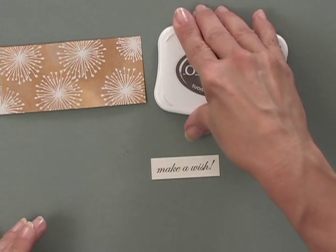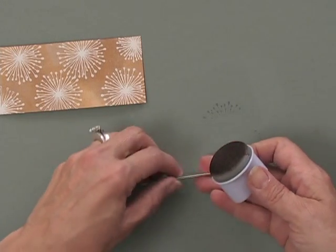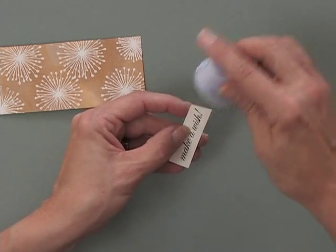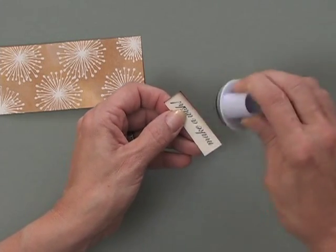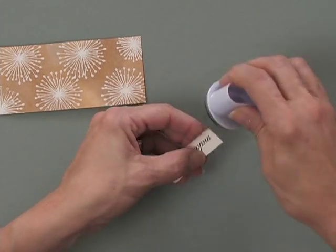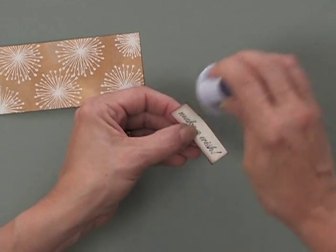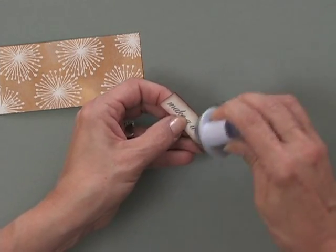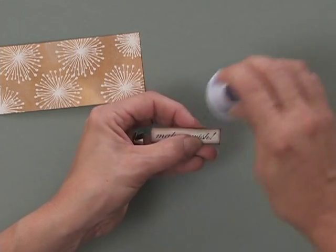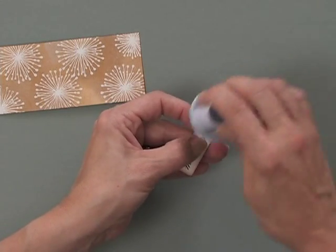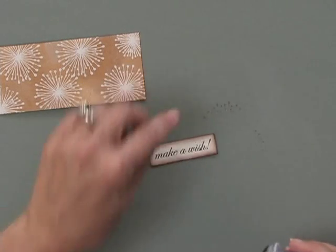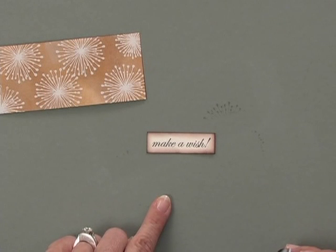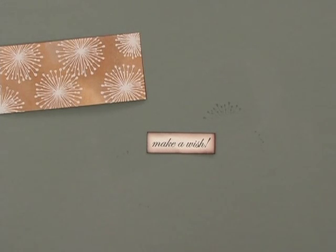And then I'm going to use that same sponge dauber that has a little bit of that cocoa ink on it. I'm going to pick this up and I'm just going to edge around my image, my greeting. That just makes it look a little bit more distressed and a little rustic. And it frames it out nicely without having to cut a piece of brown paper to fit behind it. A little bit of burnished look to it.